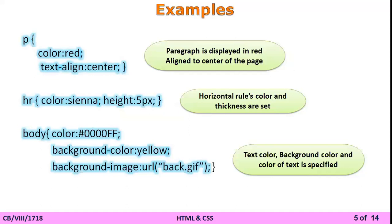We can also apply CSS on the body tag. The color property sets the font color, background-color sets the background color of the body, and background-image sets the background image of the body. These are three different CSS examples applying properties on the p tag, hr tag, and body tag.